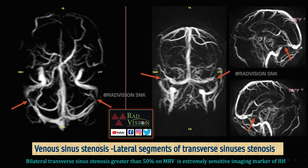The most sensitive and specific finding in IIH: whenever we suspect IIH on MRI brain, along with the orbital sequences we must also obtain MRV. On MRV, the lateral segments of the transverse sinuses are stenosed — here you can see the lateral segments of the transverse sinuses are stenosed — which is a classical finding in IIH. Bilateral transverse sinus stenosis greater than 50% on MRV is an extremely sensitive imaging marker of IIH.